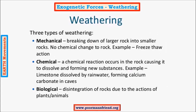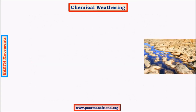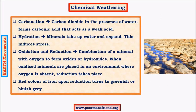Moving to the core topic of weathering — there are primarily three important types: mechanical, chemical, and biological. In chemical weathering, important processes include carbonation, hydration, oxidation, and reduction. In carbonation, carbon dioxide reacts with water to give carbonic acid, and rocks are very susceptible to acids. Carbonic acid, being a weak acid, can influence the breakdown of rock over a period of time.